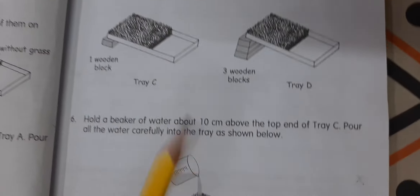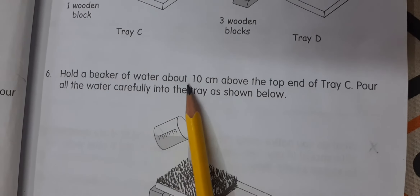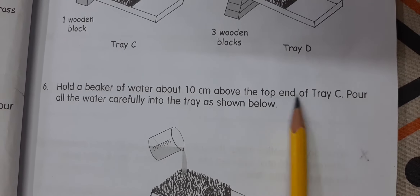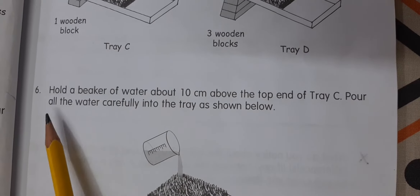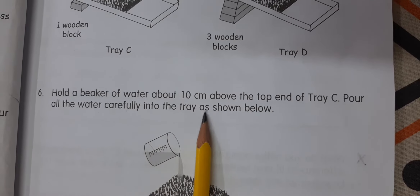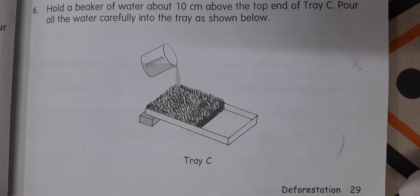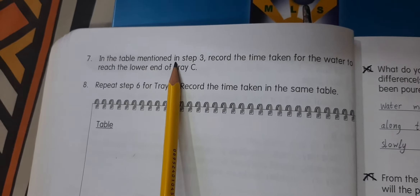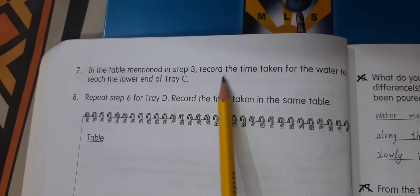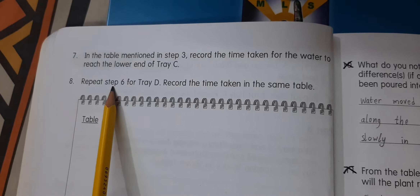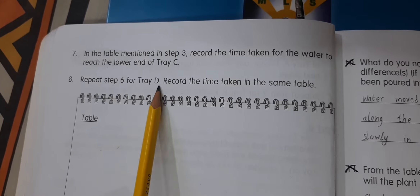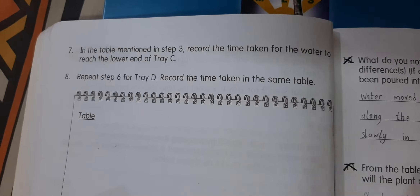As shown, hold a beaker of water about 10 centimeters above the top end of Tray C and pour all the water carefully into the tray. Record the time taken for the water to reach the lower end of Tray C in the table. Repeat the step for Tray D and record the time taken in the same table.